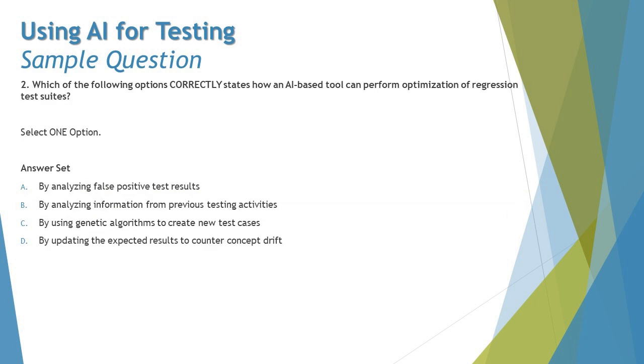Moving on to the next one, the second question we have is: Which of the following options correctly states how an AI-based tool can perform optimization of regression test suite? That again comes from a very straightforward topic where we discussed about regression testing and reducing the effort on that. Right here we have very straightforward options.